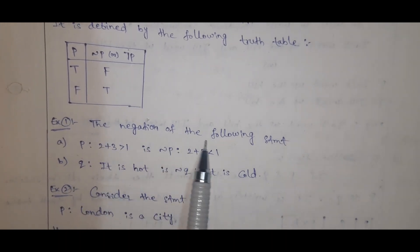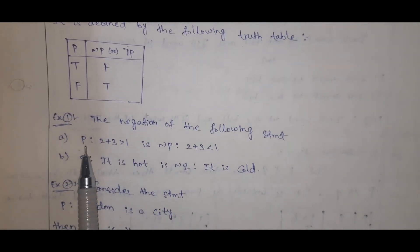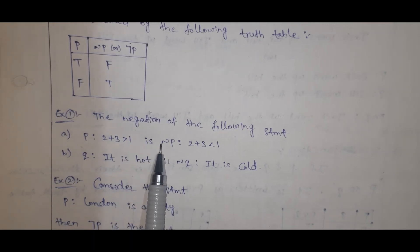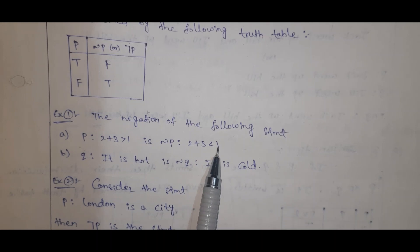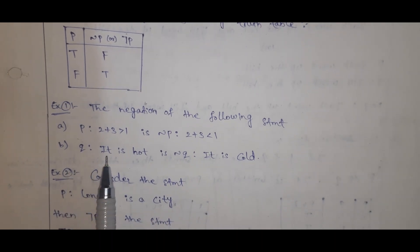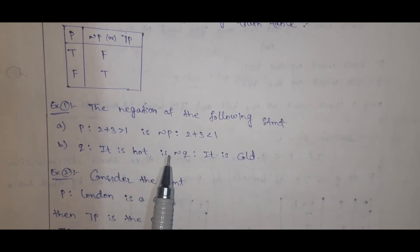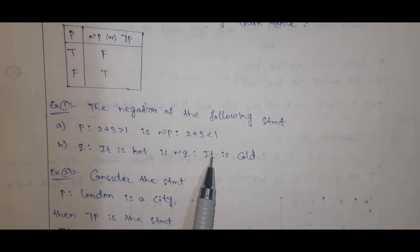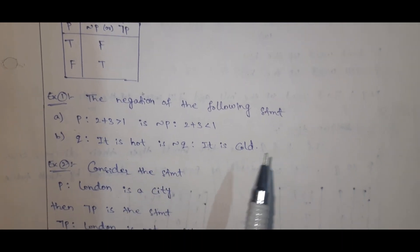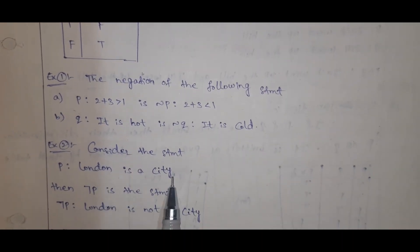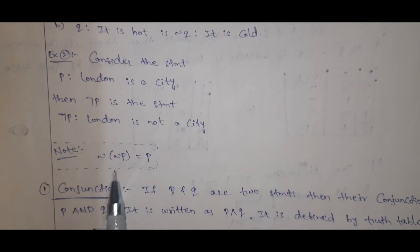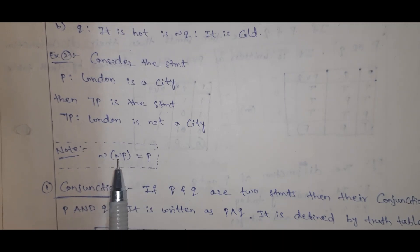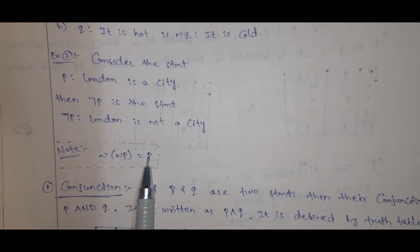Example 1 — the negation of the following statements: P: '2 plus 3 is greater than 1.' Negation of P: '5 is not greater than 1' (i.e., 5 is less than 1). Q: 'It is hot.' Negation Q: 'It is cold' — hot and cold are opposites. Similarly, 'London is a city' becomes 'London is not a city.' Also, applying negation twice returns the original proposition.